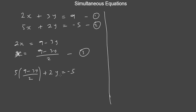To clear the fraction, multiply all terms by 2, the LCM. Multiplying: 5 times bracket 9 minus 3y plus 4y equals minus 10. The 2 in the denominator cancels with the 2 multiplied through. Now expand: 5 times 9 gives 45, and 5 times minus 3y gives minus 15y, plus 4y equals minus 10.